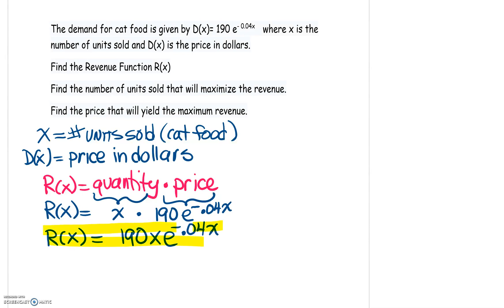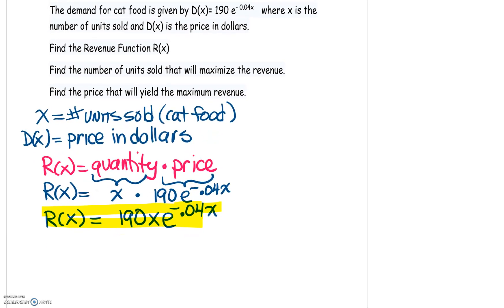So this will be our revenue function. This is the answer to part A. The next thing they want to know is find the number of units sold that will maximize the revenue. So if you want to maximize the revenue, you start with taking your revenue function, finding the critical point, identifying if that critical point's a minimum or a maximum, and then going from there. So we're going to start with finding the critical point, which means we have to get the derivative of the revenue.